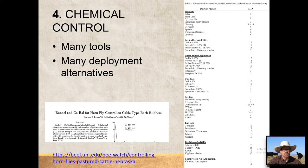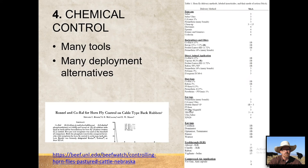The fourth strategy is chemical control, and there are a lot of tools. Some have been around for many decades — like Coral. These have different delivery methods: pour-ons, back rubbers and oilers, direct animal application, dust bags, ear tags — which have certainly gained in popularity — and then fed-through products or IGRs. There's also a compressed air gun application method worth mentioning.